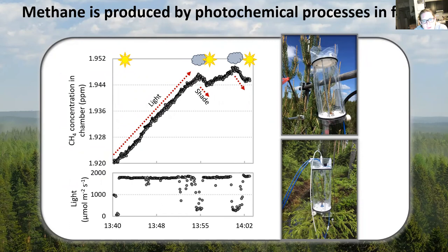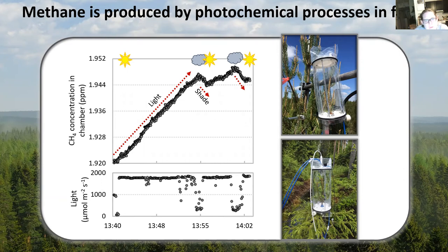A second process that produces methane in trees happens at the other end — high up in the canopy. We know that when light hits biomass, leaves, or needles of trees, it can react with the biomass and produce very small amounts of methane. You can see this in the figure from an experiment where we put a branch of a pine tree into a chamber and measured the methane concentration. As long as the sun is out, concentration slowly increases. When a cloud covers the sun, it decreases. When the sun returns, it increases again. This tells us these pine shoots do produce methane, and it is intimately linked to the reaction of sunlight with tree biomass.